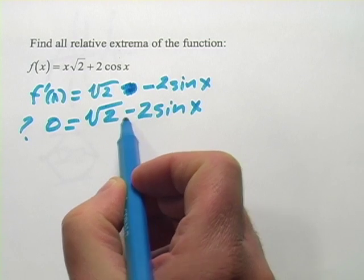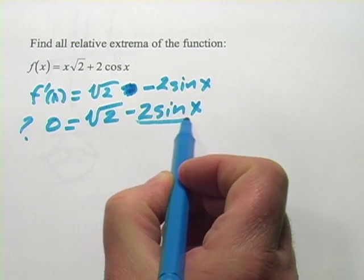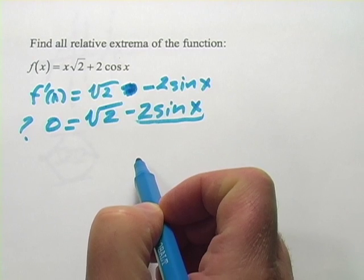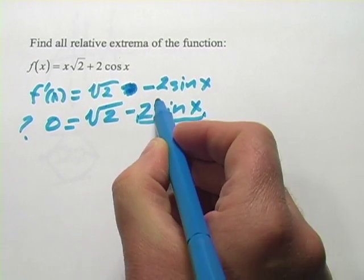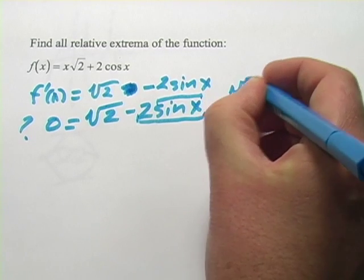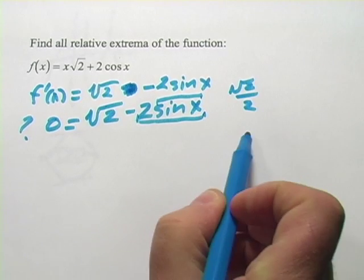So what we want, really, is for this chunk right here to be the square root of 2. If we're multiplying the sine by 2, I would want this chunk to be square root of 2 over 2. Where is that the case?